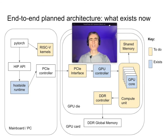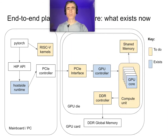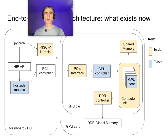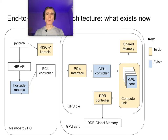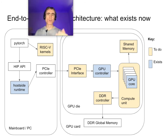Of this architecture, what exists now and what is to do? In blue are things that exist now, in yellow are things we need to do. The host-side runtime exists — we can already run C++ programs with GPU kernels that run in the simulated GPU core. We've got a GPU controller that handles communication on the die. We've got a GPU core handling basic arithmetic — int and FP, currently FP32, which we need to migrate to BF16. We don't yet have the PCIe interface, the DDR controller, and we haven't compiled RISC-V kernels for PyTorch.